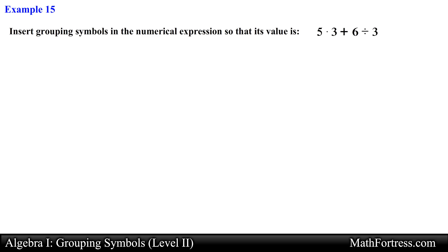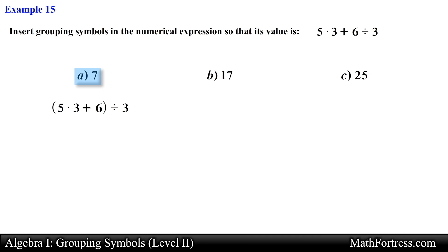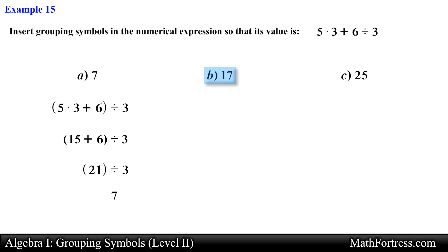Alright, let's try a distinct type of problem: insert grouping symbols in the numerical expression so that its value equals a) 7, b) 17, and c) 25. For a), to get 7 we group the quantity (5 times 3 plus 6): we work the product first to get 15, add 6 to get 21, then divide 21 by 3 which simplifies to 7.